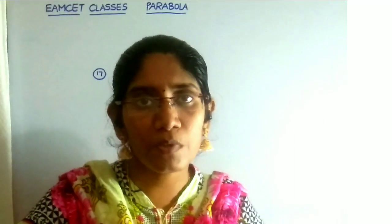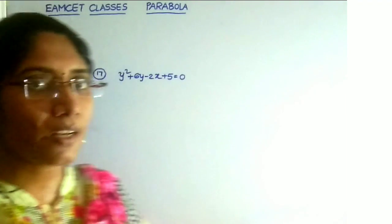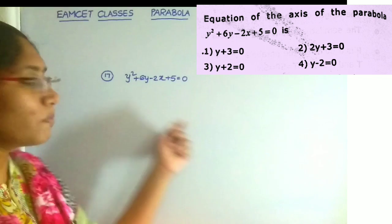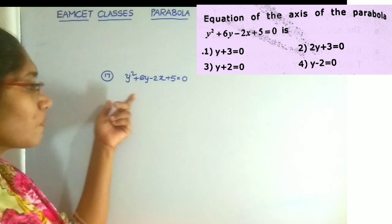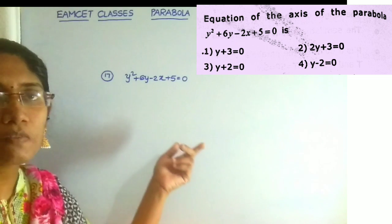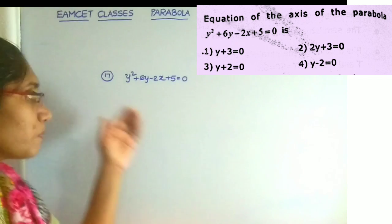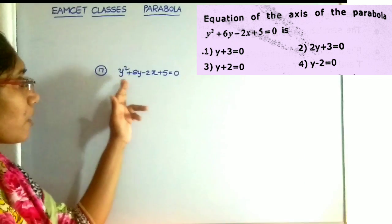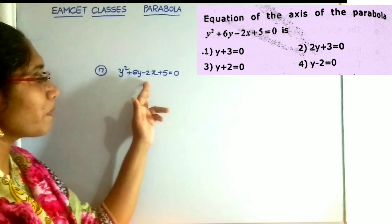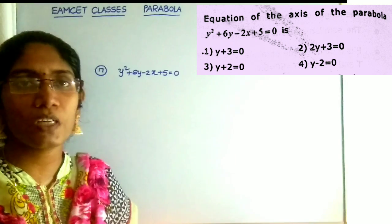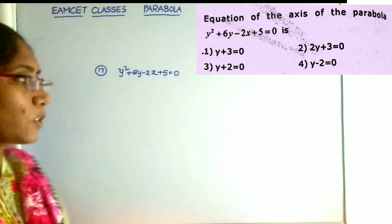Good morning students. In this video, I continue with the parabola problems. This is video number 3 of the parabola problem. The next question is a continuation problem: what is the equation of the axis of the parabola y squared plus 6y minus 3x plus 5 is equal to 0?